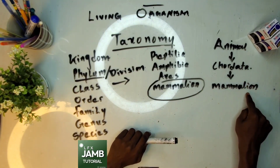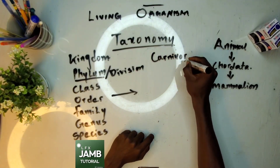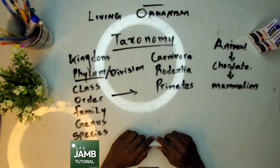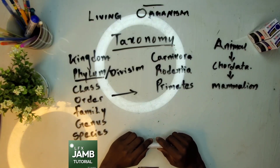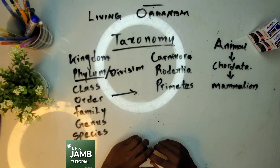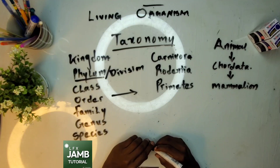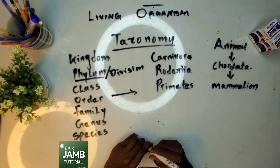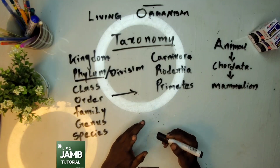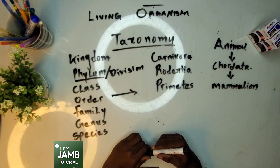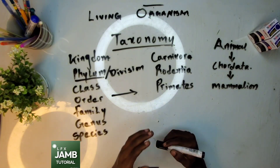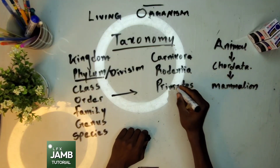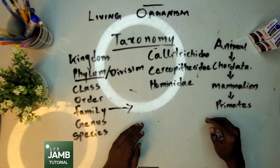Let's check the orders of Mammalia and where we fall under. Under Mammalia we have Carnivora, Rodentia, and Primates. Carnivores are animals that feed on flesh. Rodentia are animals with smooth skulls and large incisors. Primates are animals that have forward-facing eyes, opposing thumbs, and many other characteristics. We fall under Primates.